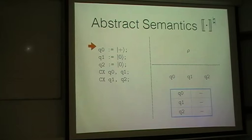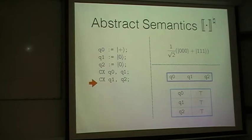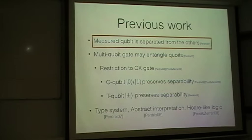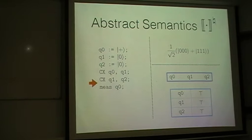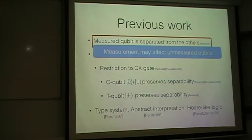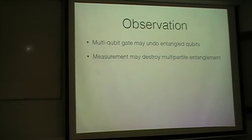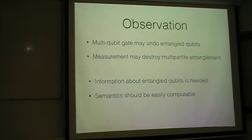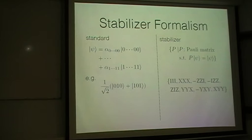Another example: this program creates the GHZ state, and the abstract state correctly says Q0, Q1, and Q2 may be entangled. But if we measure the zeroth qubit, the rule says only the measured qubit is separated. Then the abstract state shows Q0 is separated but Q1 and Q2 still may be entangled. Of course, the concrete semantics shows they are all separated. This means even non-measured qubits may be influenced by measurement. In order to reflect these facts, we have to extend the abstract domain AQ to store information about already entangled qubits, but it should be efficiently computable. These requirements lead us to use stabilizer formalism.